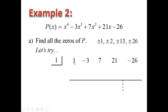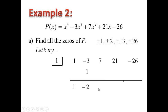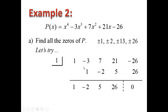For the synthetic division, the first number we just bring down. Then 1 times 1 equals 1. Plus negative 3, we get negative 2. Running through the same process: negative 2 times the divisor gives negative 2. Then 7 plus negative 2, the new remainder is 5. Then 5 times 1 is 5, plus 21 gives 26. The last blank is positive 26, and the remainder ends up as 0. After synthetic division, the degree reduces by 1, so the quotient is x cubed minus 2x squared plus 5x plus 26.